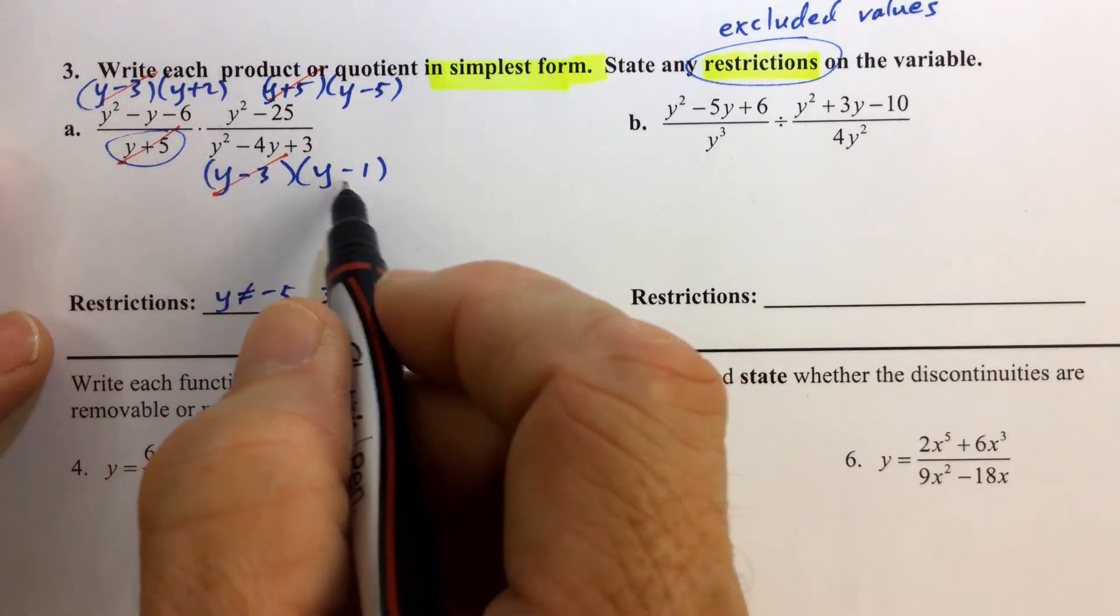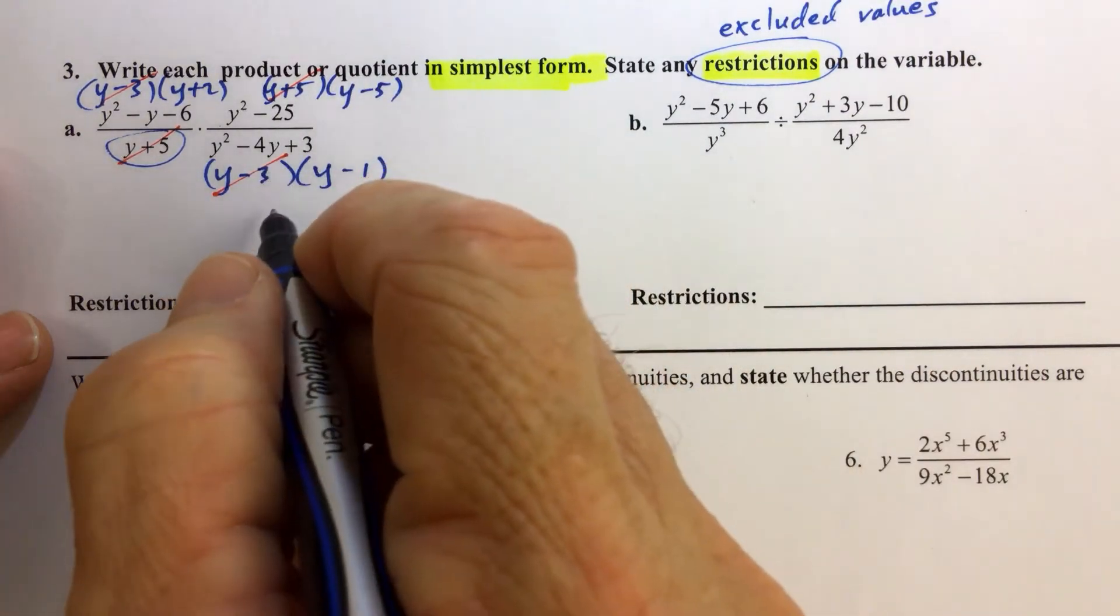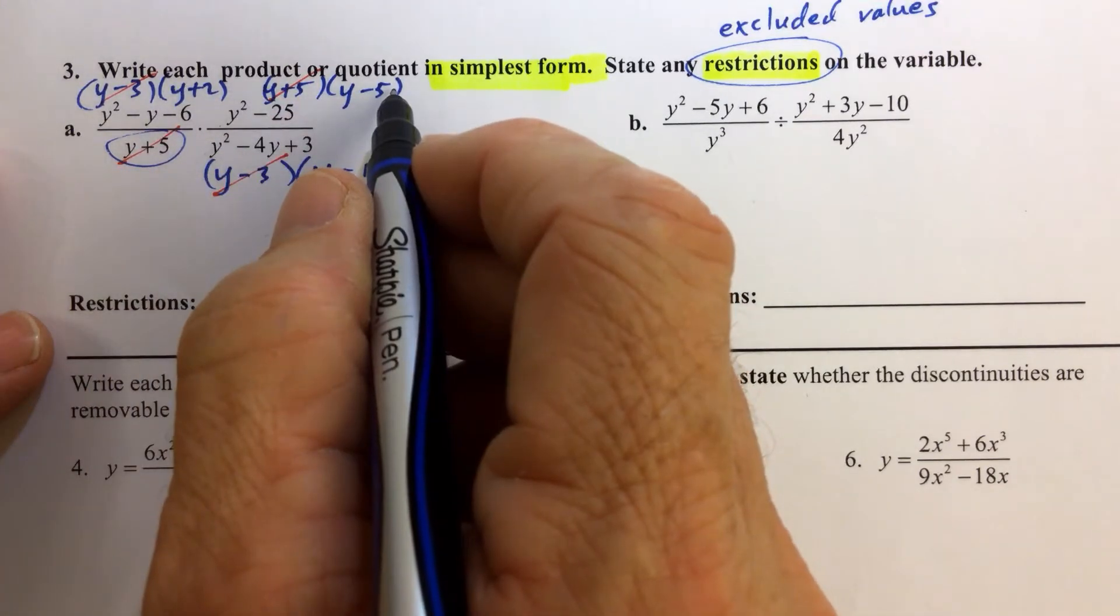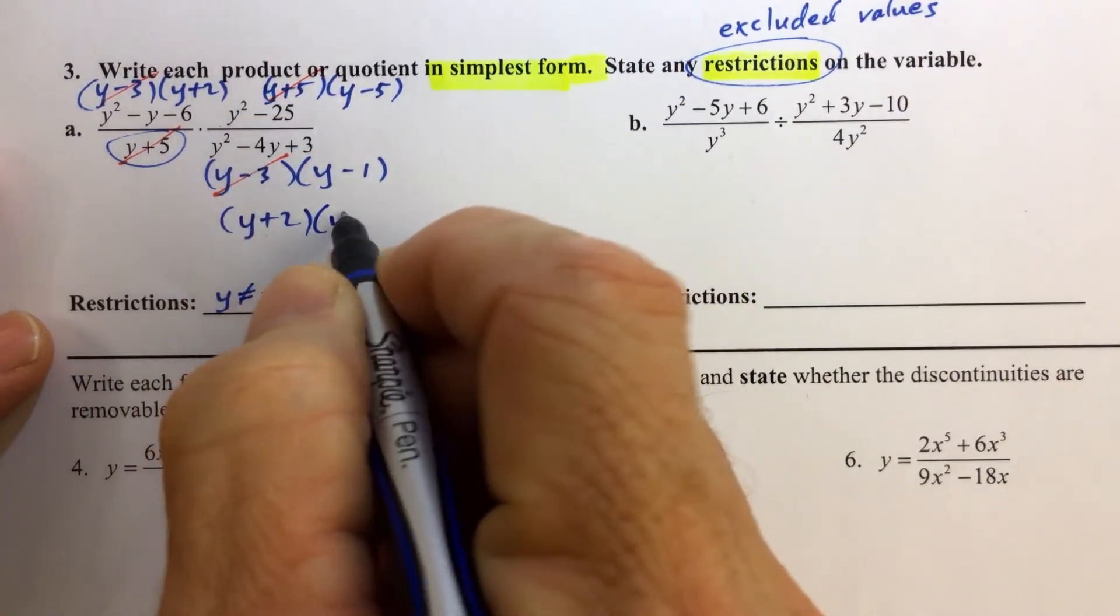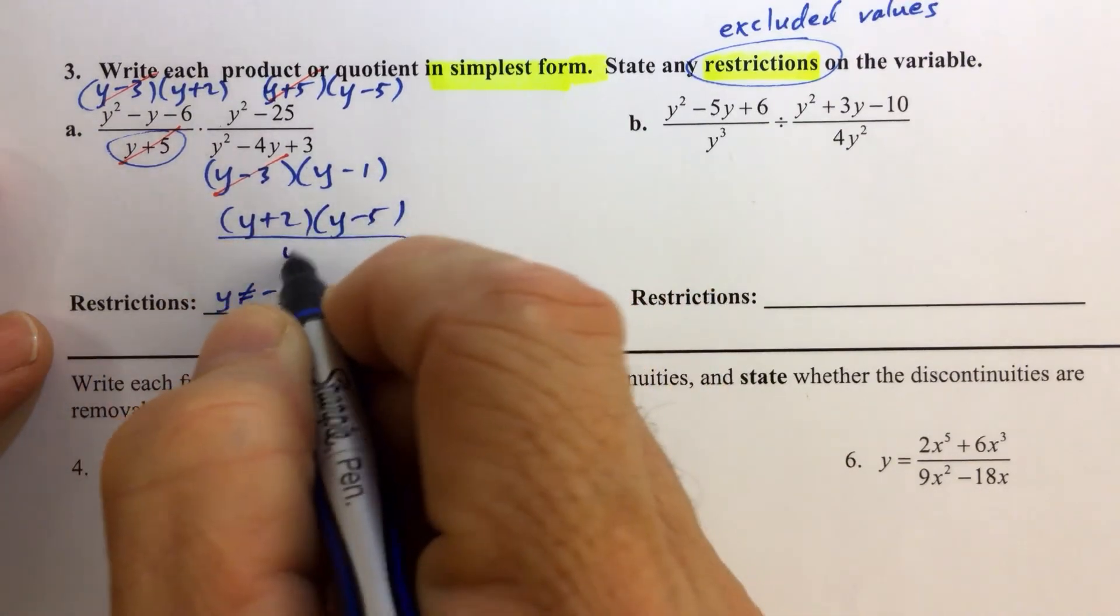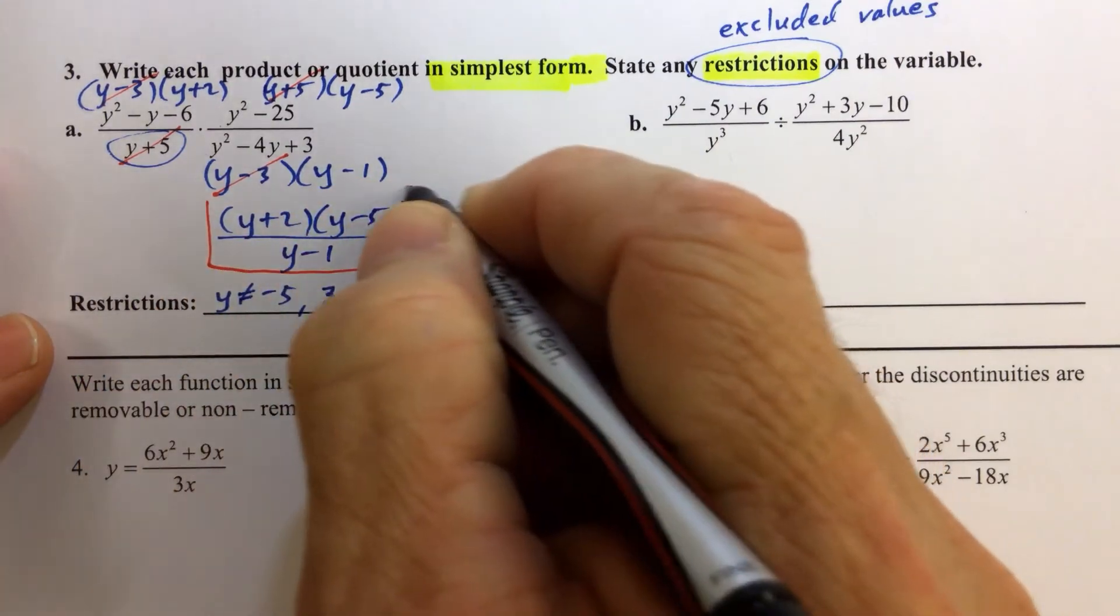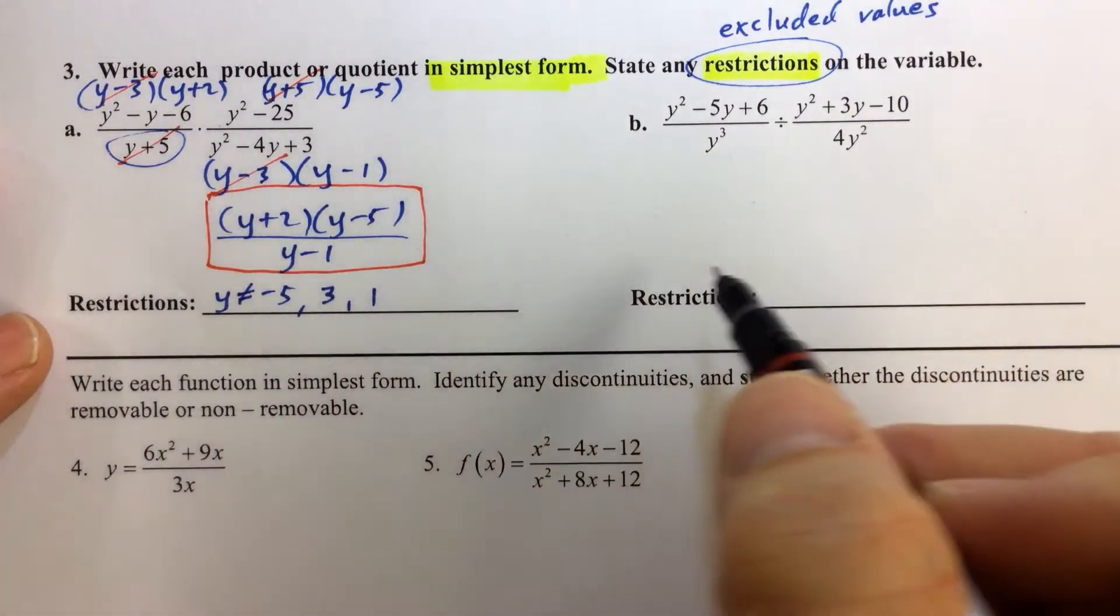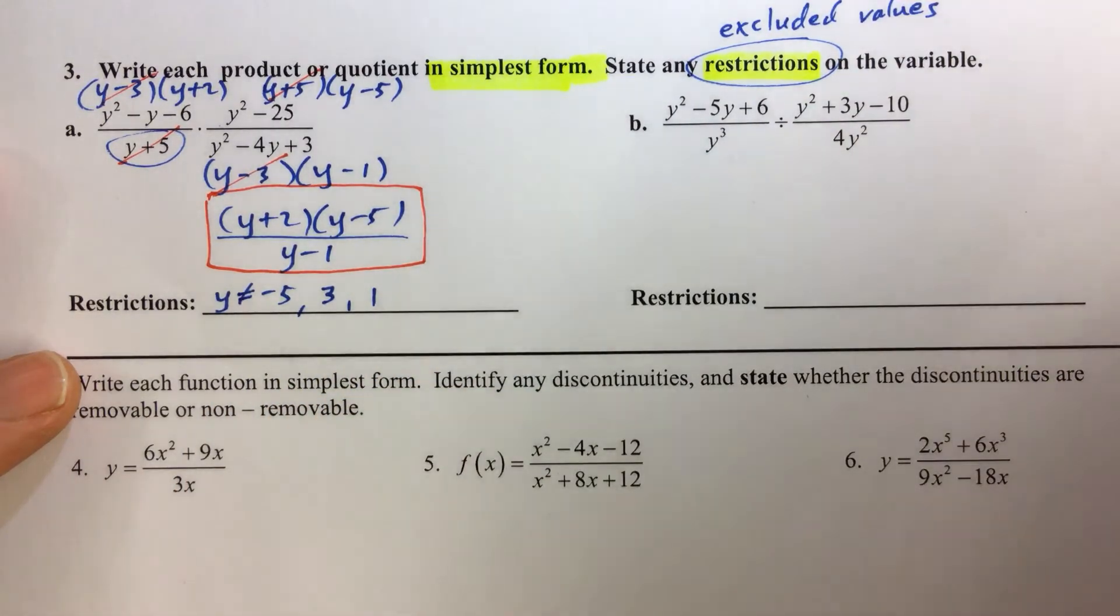We don't have any y minus 1s anywhere, so we're done canceling. The factors remaining in the numerator would be y plus 2 up on top, and we also have y minus 5. Down below, the only factor remaining is y minus 1. So we've written the product in simplest form and identified the restrictions, so we've reached our objective.